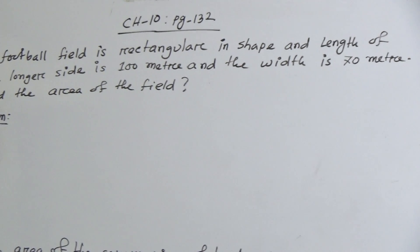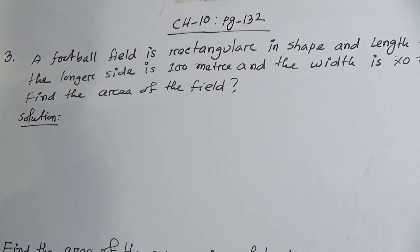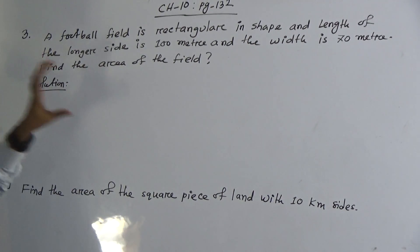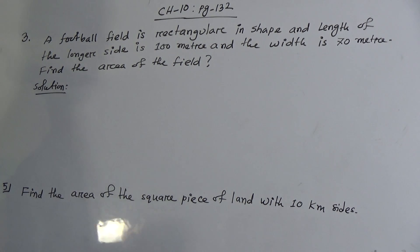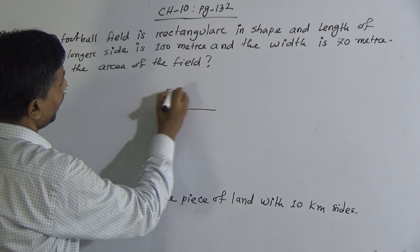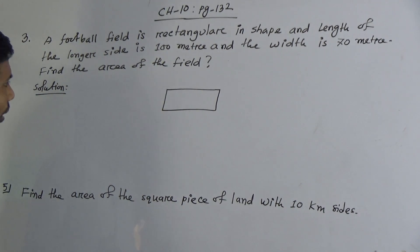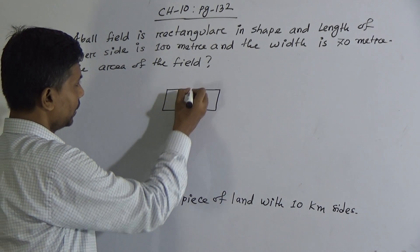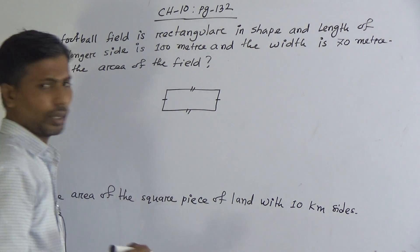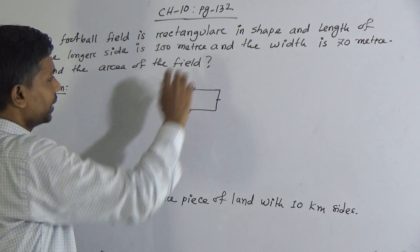Then, look student, Chapter 10, Page 132. Remember, I have selected here two word problems, but at first I will discuss with you about a formula. Suppose, you know, this is a rectangle. This is called length and these are called width or breadth.